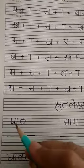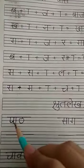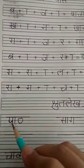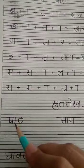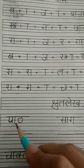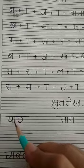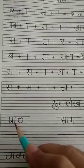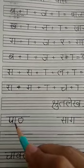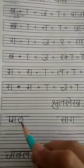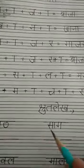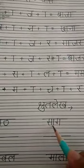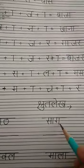Firstly, speak first and then write. Pa. Aa-ki matra lagi hui hai, so we will speak 'paath'. Speak pa — aa-ki matra — speak like this. Speak pa-th. Sir ke saath aa-ki matra, so we will speak 'saag'.